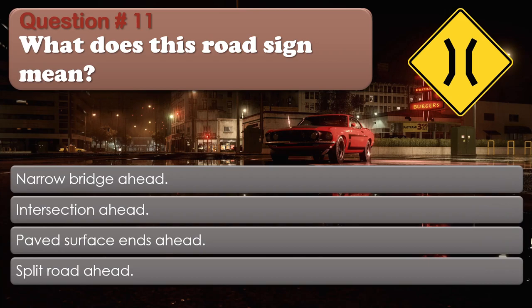Question number 11: What does this road sign mean? Options: Narrow bridge ahead. Intersection ahead. Paved surface ends ahead. Split road ahead. The correct answer is Narrow bridge ahead.